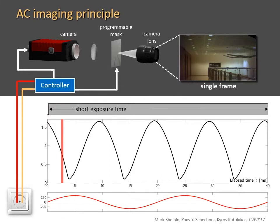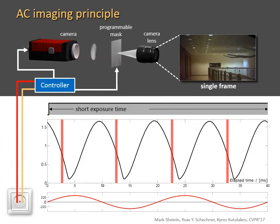The ACAM has a programmable optical shutter, called mask, between the sensor and camera lens. The camera exposure is set to span hundreds of flicker cycles. During this long exposure, the programmable mask blocks the light from the scene at all times except during specific preset brief intervals in each cycle. These preset intervals all correspond to the same fraction of the flicker period. The ACAM is physically connected to an AC outlet, which ensures that the mask unblocks the light at the precise instant within each flicker cycle.